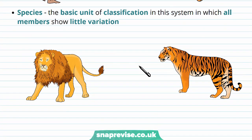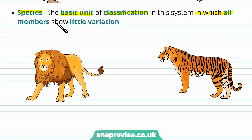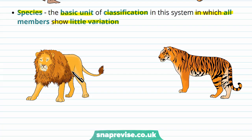Then under this, we have specific species. The basic unit of classification is a species, and within a species all organisms show very little variation — though there is some genetic variation. For example, all tigers in a population will have certain differences, as do humans, but they're distinct enough to be a different species from, say, lions or bears. Species is the last level.